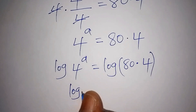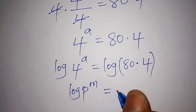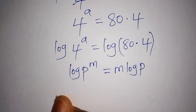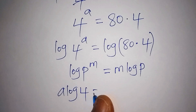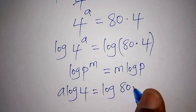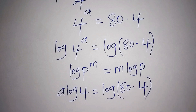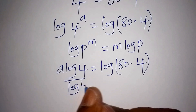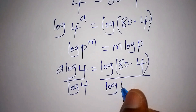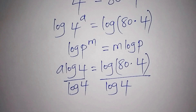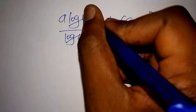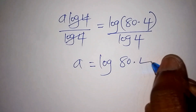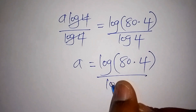From here, using the rule that log of p to the power of m equals m times log of p, the log of 4 to the power of a can be written as a times log 4, equals log of (80 times 4). We then divide both sides by log 4, and log 4 cancels, leaving a equals log(80 × 4) all over log 4.